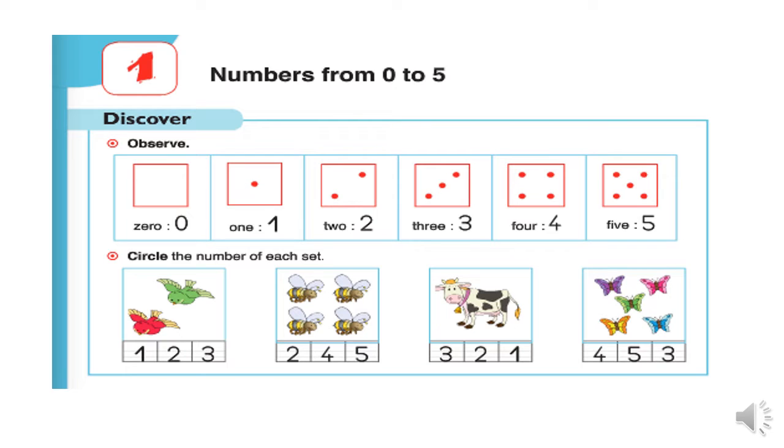Let's discover them while observing this figure. In the first box, we don't have any dot, so this represents number zero. Zero in letters and zero in numbers.